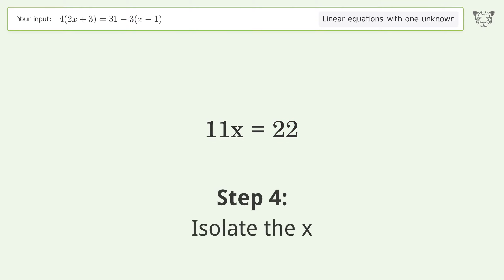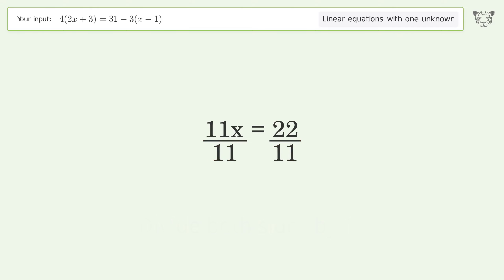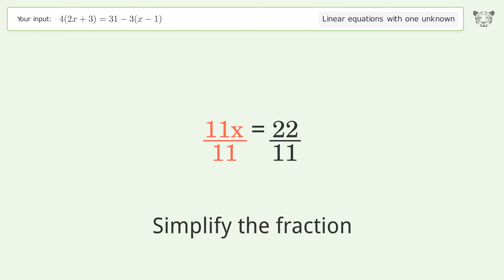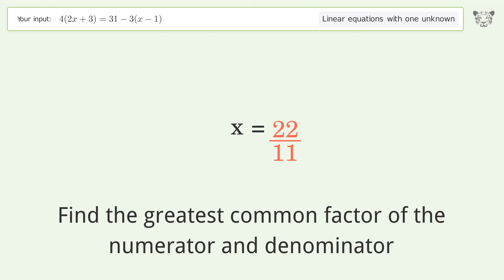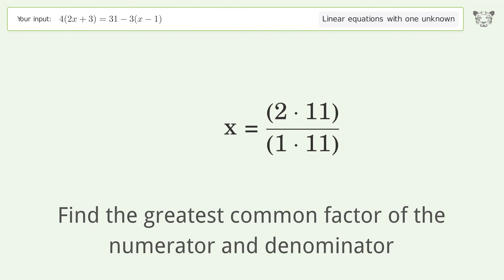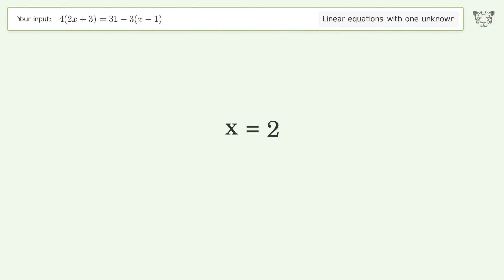Isolate the x — divide both sides by 11. Simplify the fraction. Find the greatest common factor of the numerator and denominator. Factor out and cancel the greatest common factor. And so the final result is x equals 2.